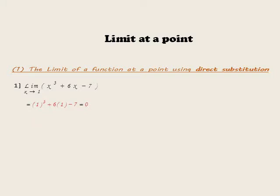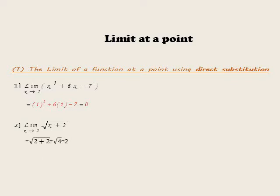1³ plus 6 times 1 minus 7 equals 0. Another example: limit as x approaches 2 of square root of x plus 2. By substituting x equals 4, square root of 4 equals 2. Another example: limit as x approaches 0 of (x plus 3) over (2x plus 1). By substituting x equals 0: